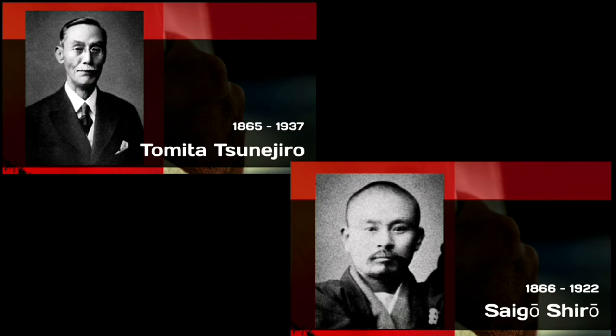Here, Kano Jigoro took on his first resident and non-resident students. The first resident students being Tomita Tsunegiro and Shiro Saigo, both becoming part of the four guardians of Kodokan Judo.